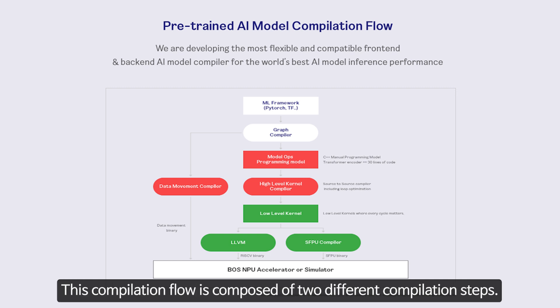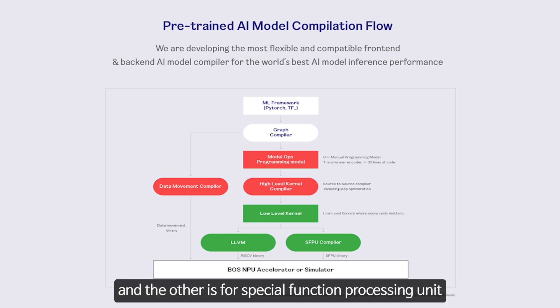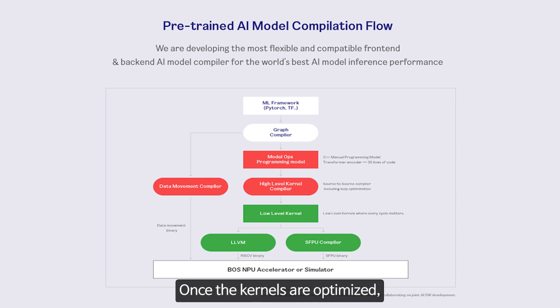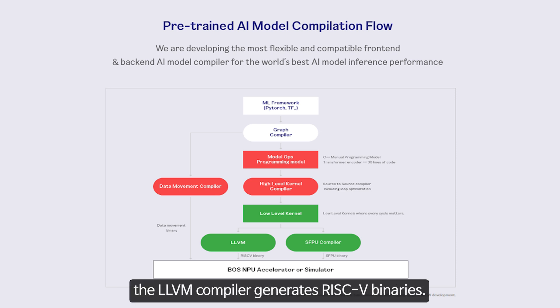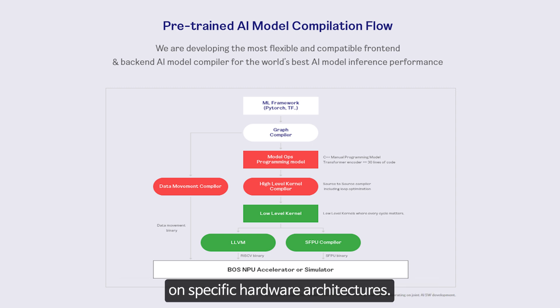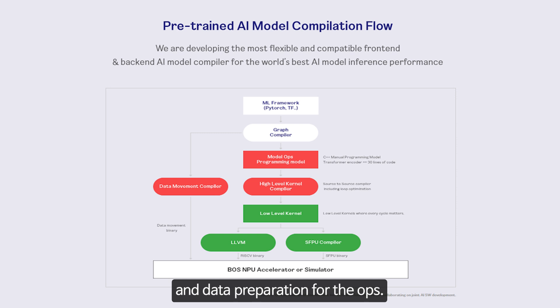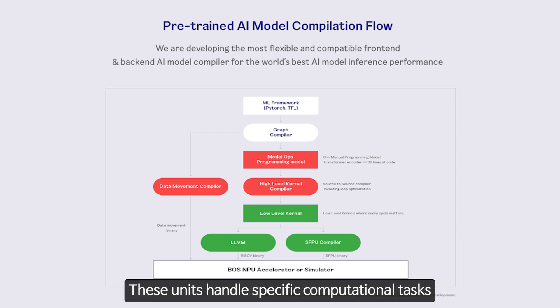The fifth and sixth steps are for low-level kernel compilations. This compilation flow is composed of two different steps: one for RISC-V and the other for special function processing units, which are our model operator compute and vector processing engine. Once the kernels are optimized, the LLVM compiler generates RISC-V binaries essential for running the model on specific hardware architectures. Simultaneously, the SAP compiler generates binaries for specialized processing units for computing ops and data preparation.